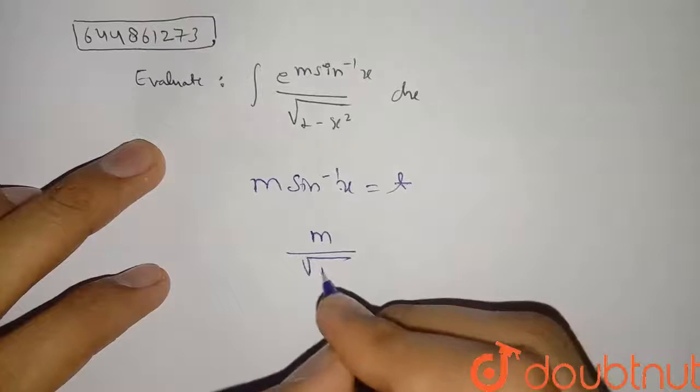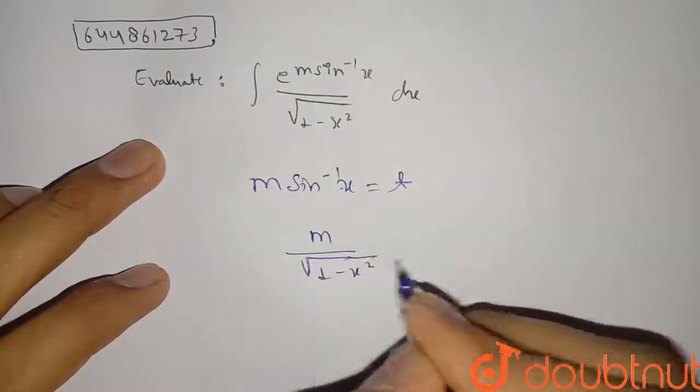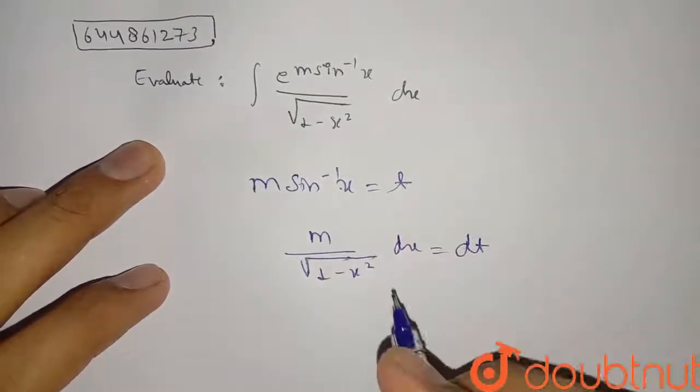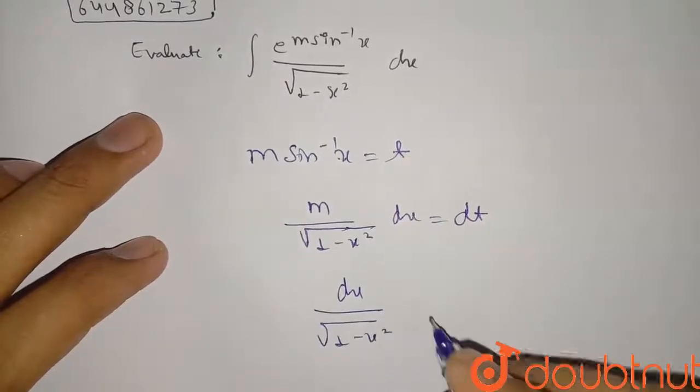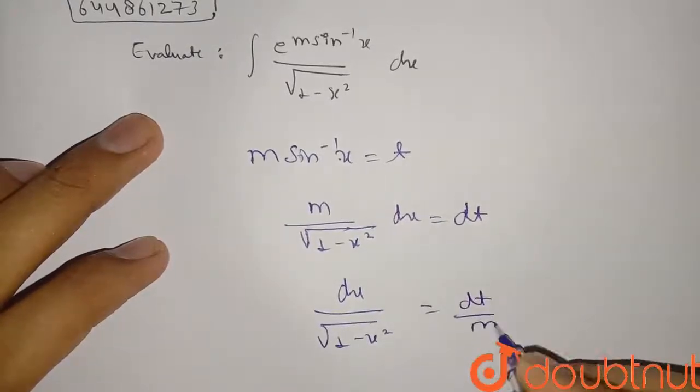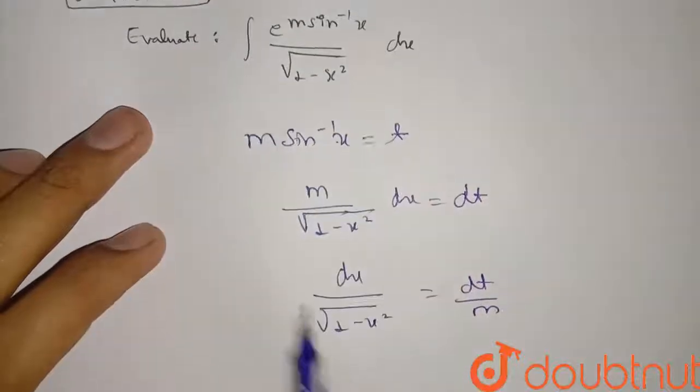So from here, value of dx upon root one minus x square will be dt by m, right? So our this integration will be integral of e raised to t, right?